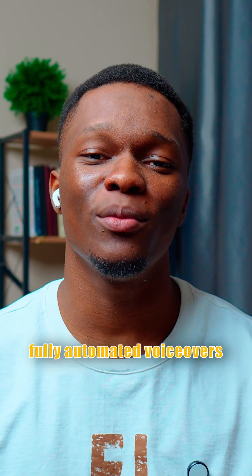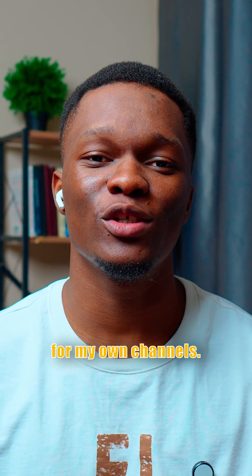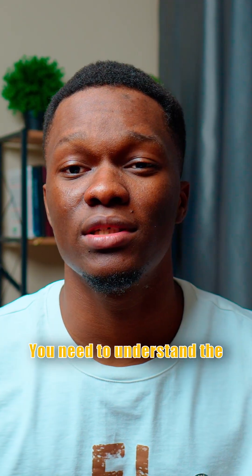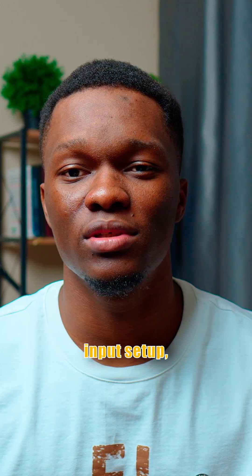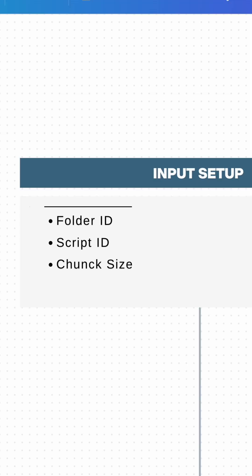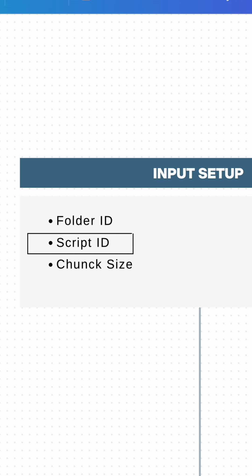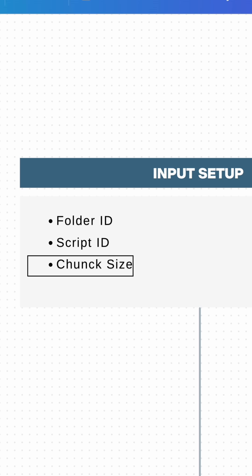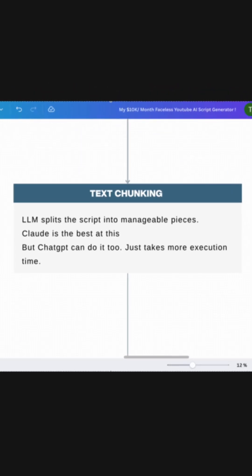I'm going to show you how I fully automated voiceovers for my own channels. You need to understand the input setup: first, a folder ID — that's a Google Drive folder where I save the generated audio files. I also need the script ID, which is the ID of the document where I save the content like the script, and then the chunk size.